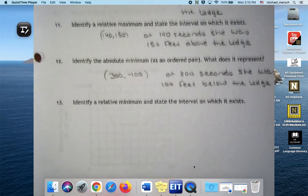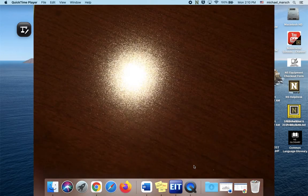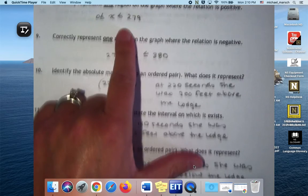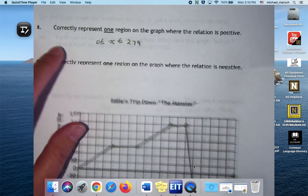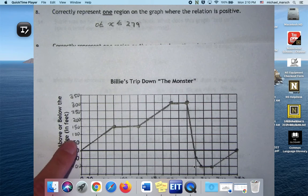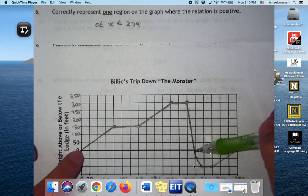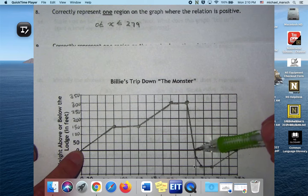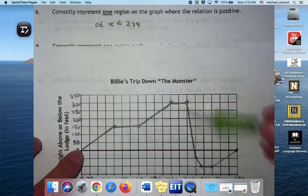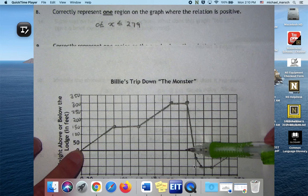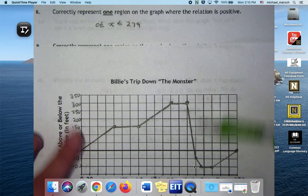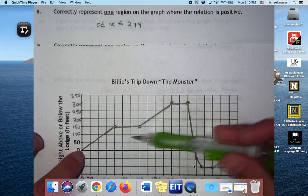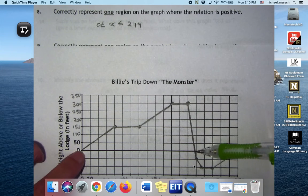Correctly represent one region on the graph where the relation is positive. So I picked this whole region between zero and like 279. Positive just means it's above our y axis, so it could have been all of this. I just put this whole section.